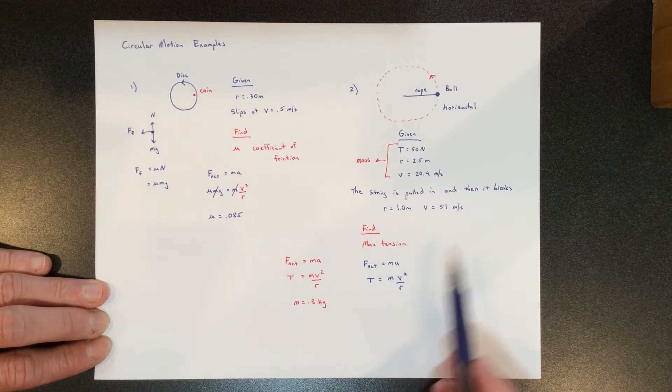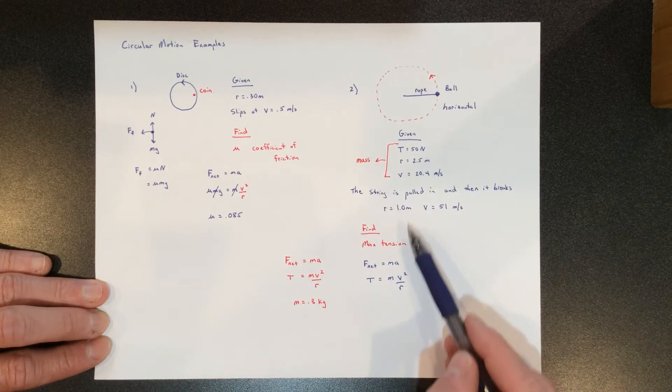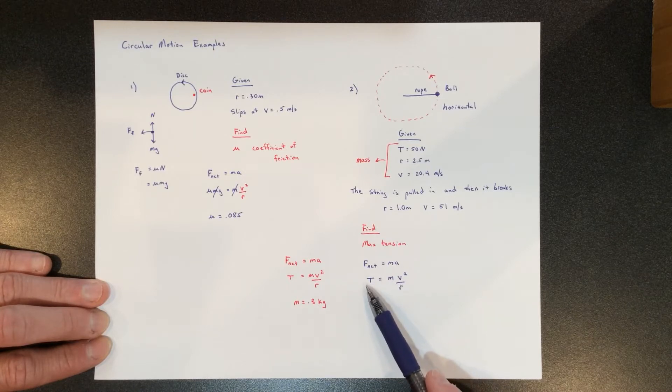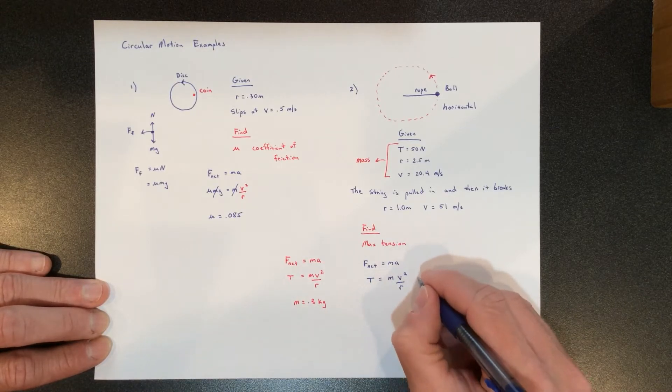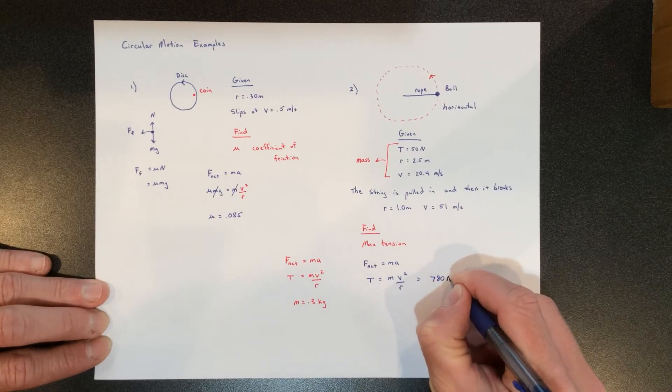If we know that it breaks at 51 meters per second at a radius of one meter, and now we know that the mass is 0.3, we can just plug those numbers in and find the tension. What you do is you get a tension right around 780 newtons.